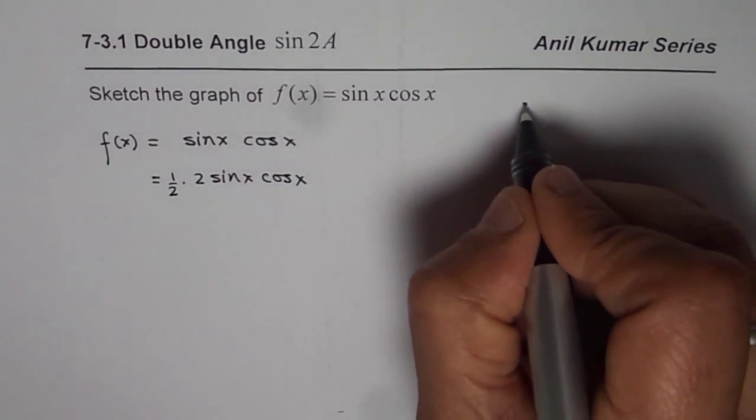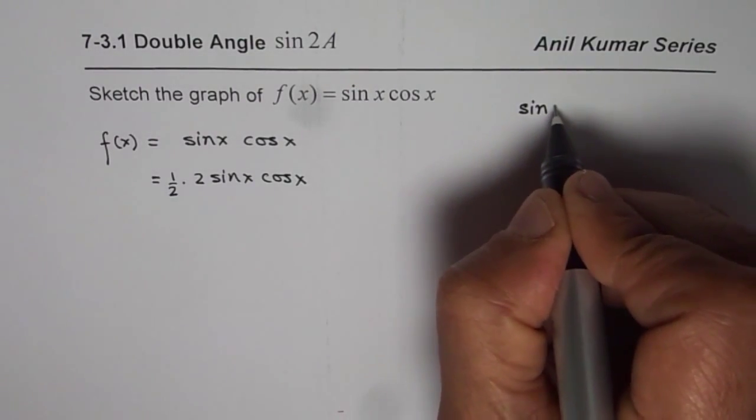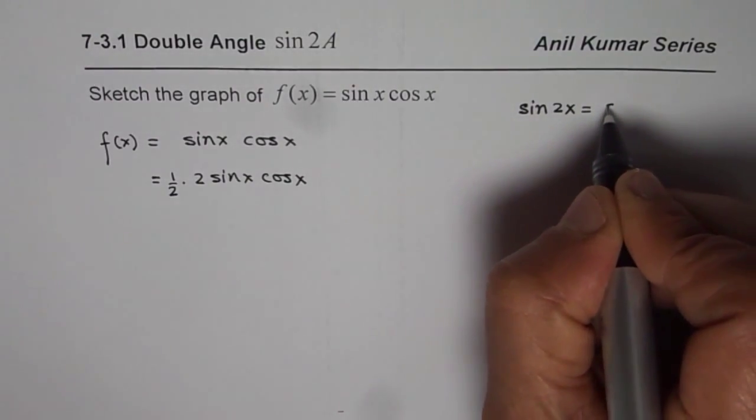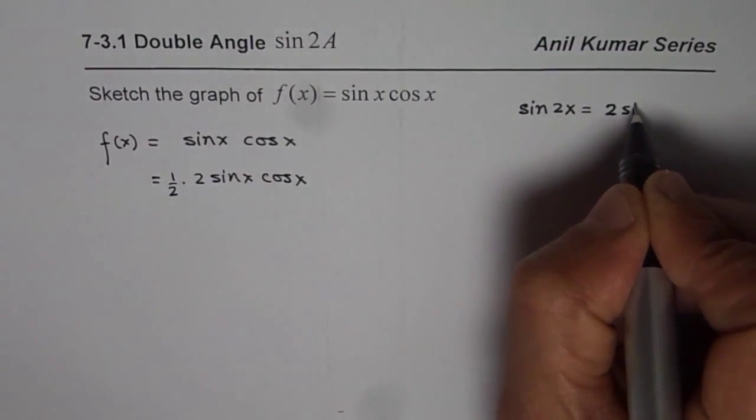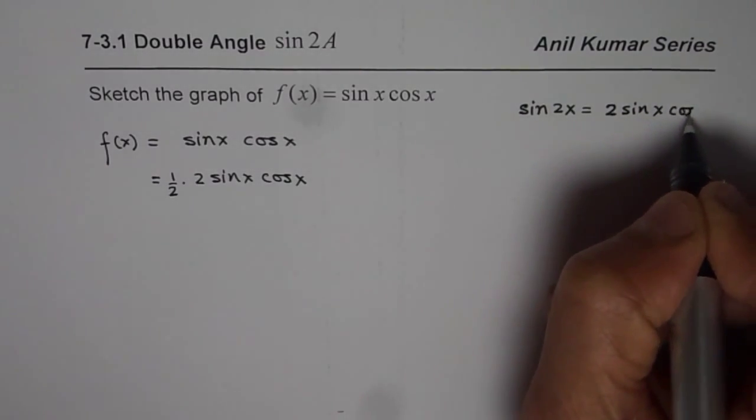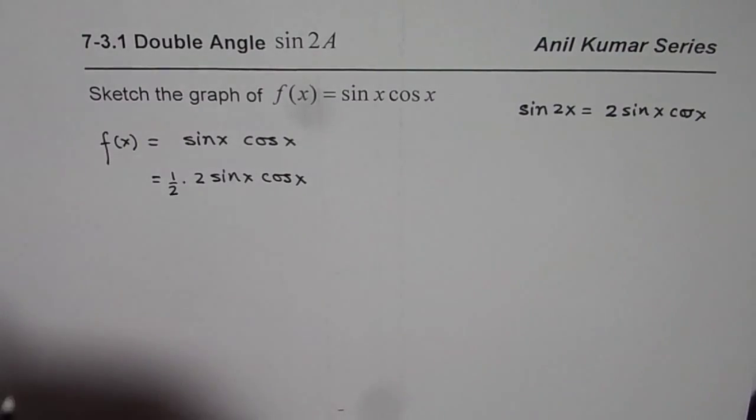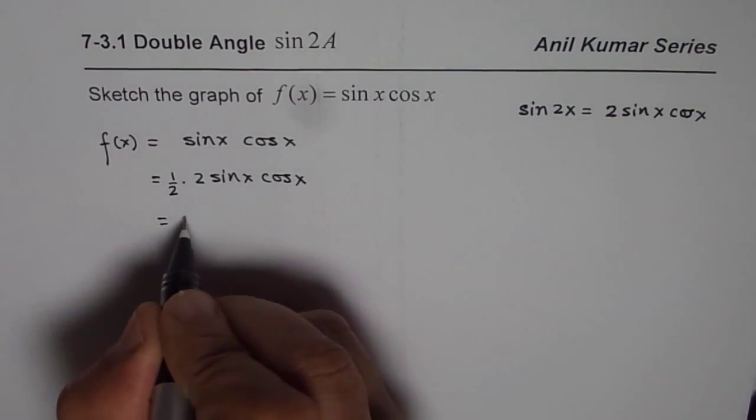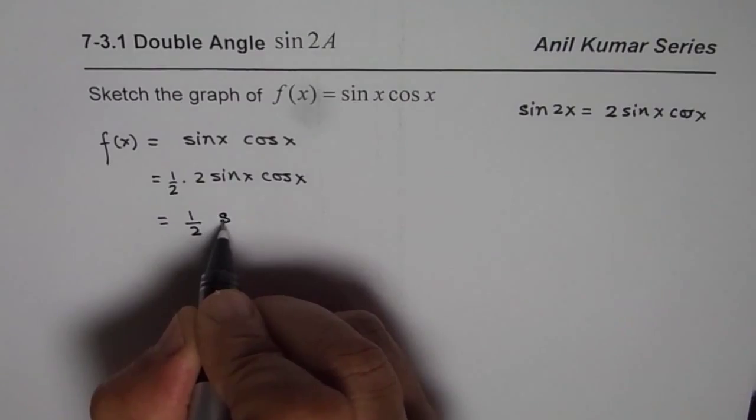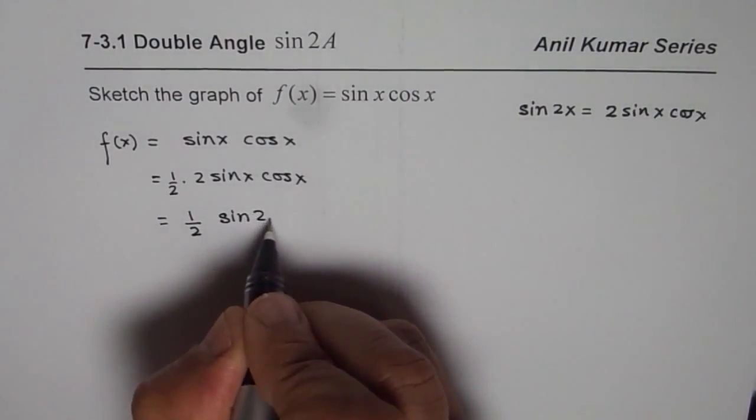Well we know sine of 2x can be written as 2 times sine x cos x. So that sine 2a formula can be applied here. So we can simplify this and write it as half of sine 2x.